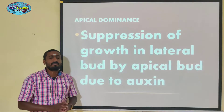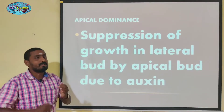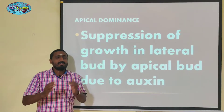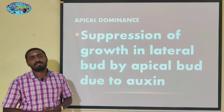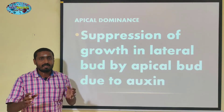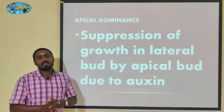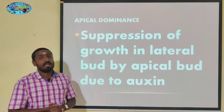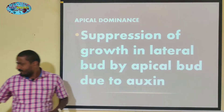Auxin is applied at the apical bud. The apical bud is one of the most important things that suppresses the lateral buds. So the lateral growth will be decreased. This is called apical dominance.